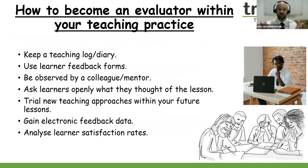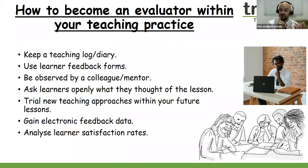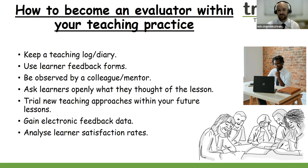Ways to become an evaluator include keeping a teaching log or diary, using learner feedback forms, being observed by a manager or mentor, and openly asking learners what they thought of the lesson. You can trial new teaching and learning approaches and get feedback on that. You can gain electronic feedback through surveys such as SurveyMonkey, getting learners to use their phones to give feedback. Be open to receiving feedback — it will make you a much more confident teacher or trainer.